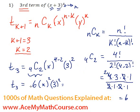Okay, so here we have 6x^2 because 4 minus 2 is 2, 3 to the 2, and 3 squared is 9. 9 times 6 is 54 and x^2 stays there, so that is the third term of our expansion: 54x^2.